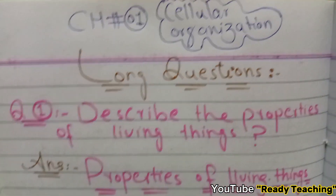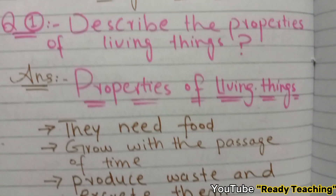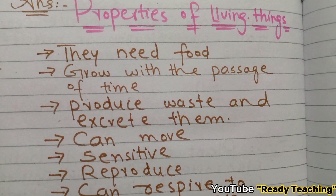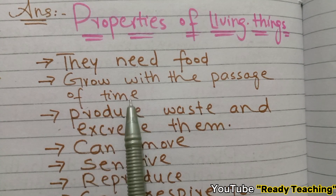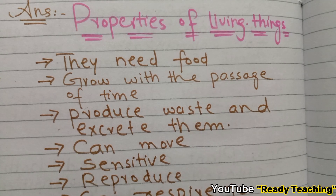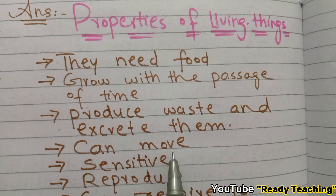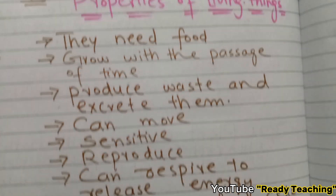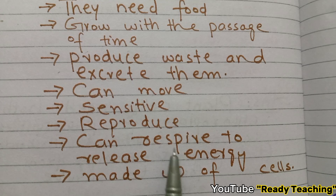Now moving to long questions. First long question: Describe the properties of living things. Properties include: they need food, they grow with passage of time, they produce and excrete waste, they can move, they can reproduce, and they can respire — using oxygen to release energy through respiration. Living things are also made up of cells.